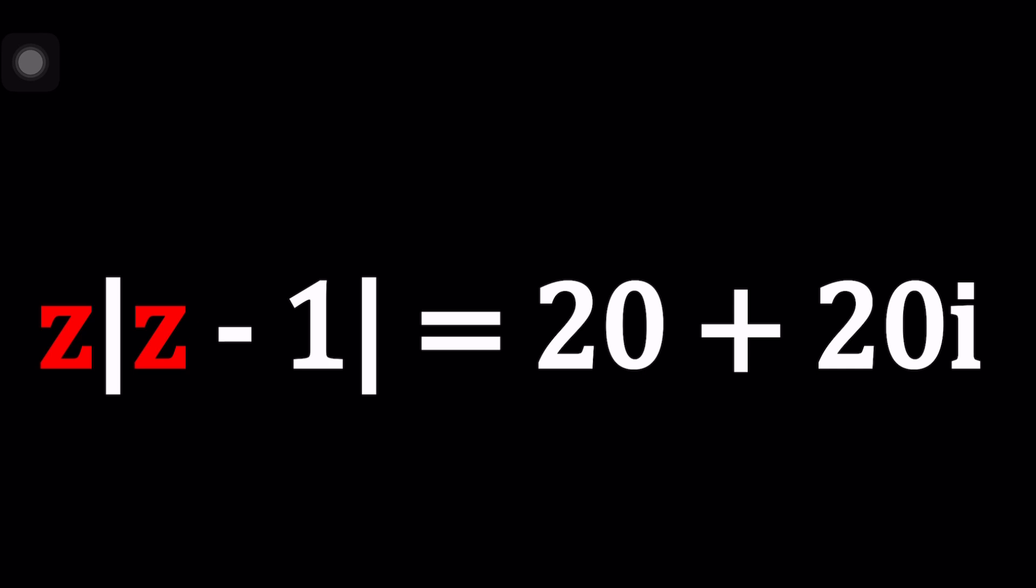We have z times the absolute value of z minus 1 equals 20 plus 20i and we're going to be solving for z values. Are there any solutions? How many z values are there? Let's go ahead and find out.